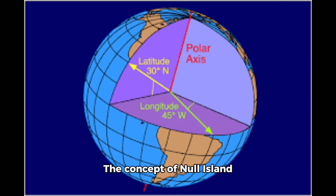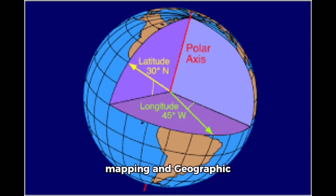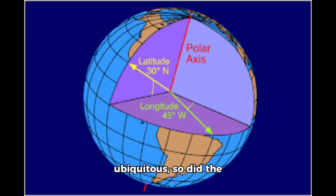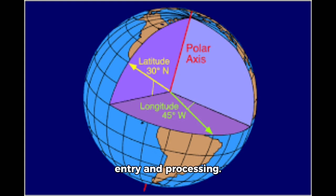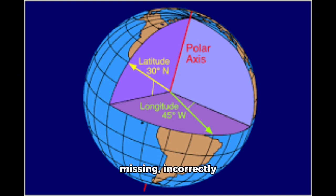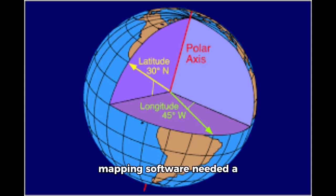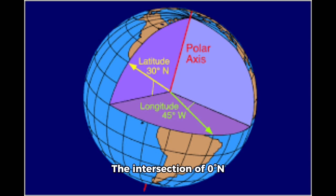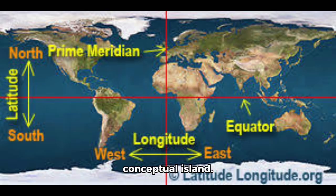The concept of Null Island rose from the practical necessities of modern mapping in geographic information systems (GIS). As digital mapping became ubiquitous, so did the inevitable errors in data entry and processing. When latitude and longitude coordinates were missing, incorrectly entered as zeros, or otherwise corrupted, mapping software needed a default location to place these erroneous data points. The intersection of 0°N and 0°E became the default, giving birth to the conceptual island.